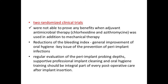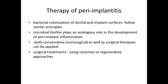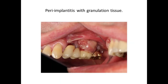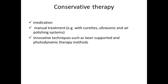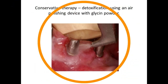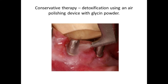You can do only mechanical therapy or add antimicrobial therapy. Reducing the bleeding index through oral hygiene maintenance and professional implant cleaning is key to preventing peri-implant infection. For peri-implantitis therapy, the microbial biofilm plays an analogous role in development of inflammation. Both conservative non-surgical and surgical therapies can be applied — surgical treatment may be resective or regenerative. Conservative treatment involves medication, manual curettes, ultrasonic air polishing, and innovative techniques like laser-supported or photodynamic therapy.